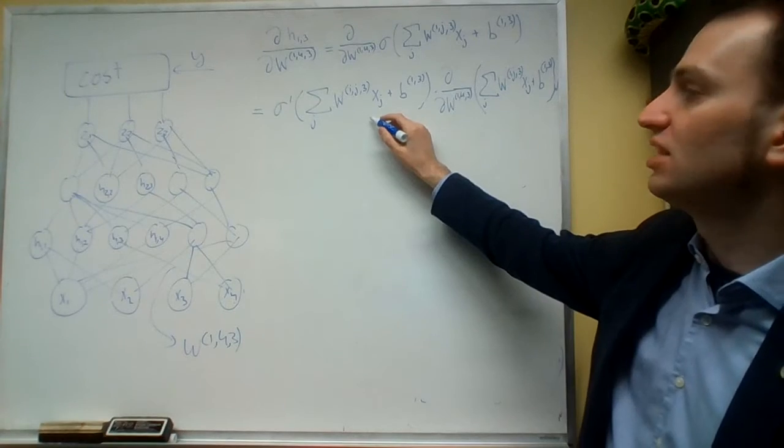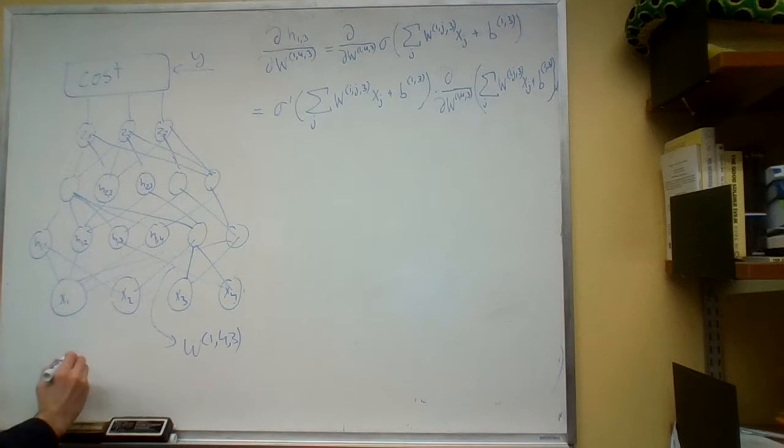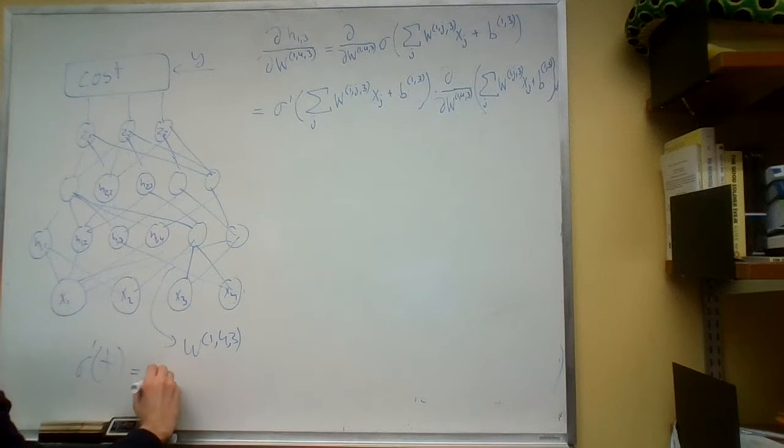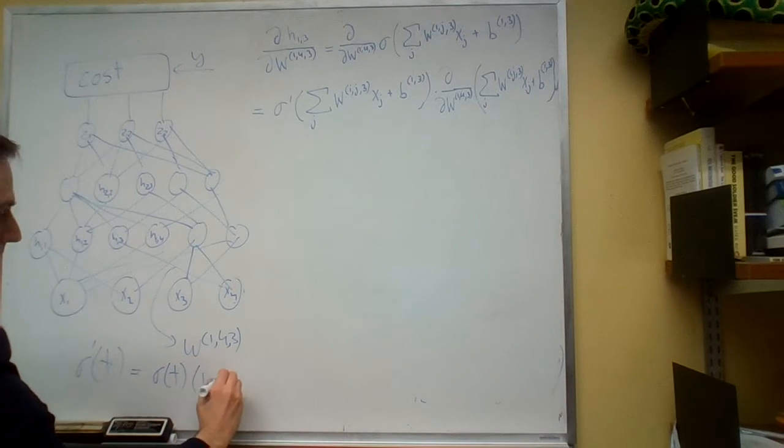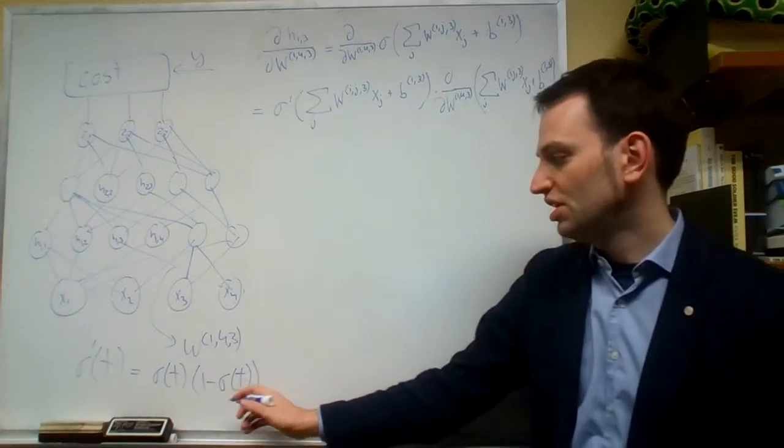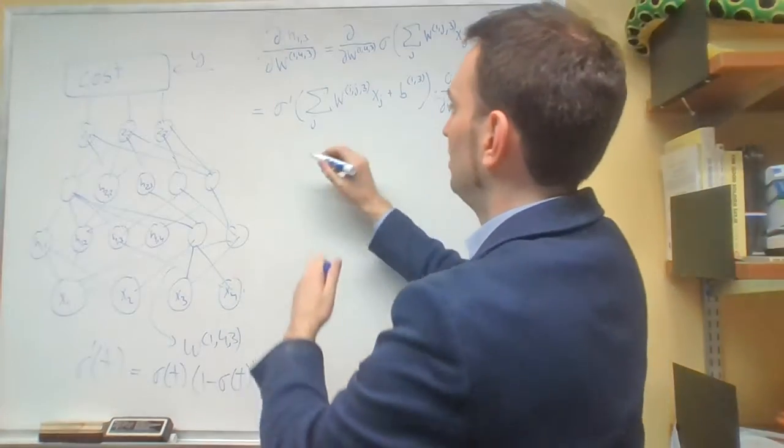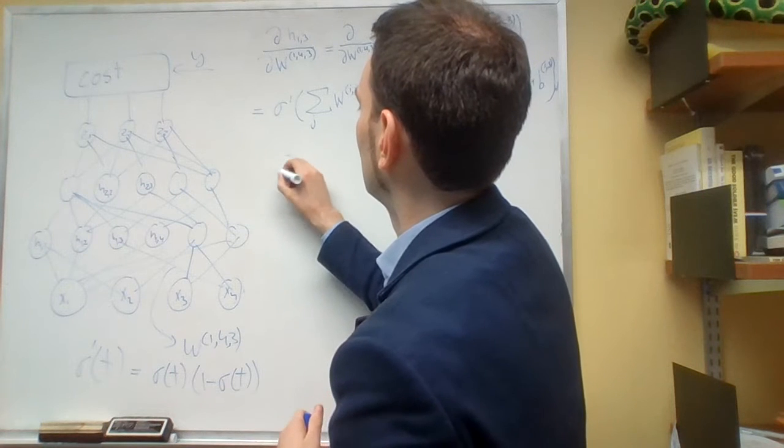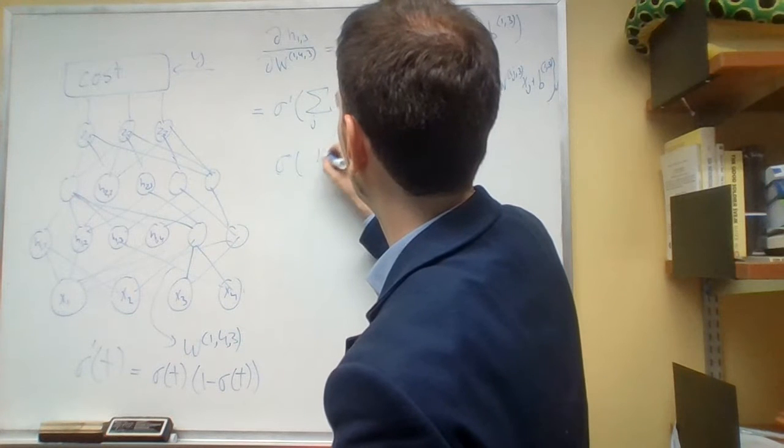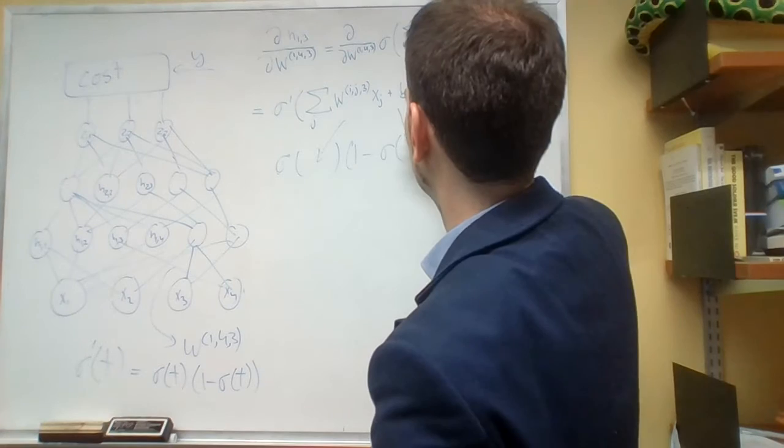So this one is easy. The reason it's easy is because what we've shown in that chart is that sigma t prime is just sigma t times 1 minus sigma t. You can just prove it with calculus really easy using the definition of the sigmoid function. So this means that this guy is just going to be sigma of this guy times 1 minus sigma of this guy again.